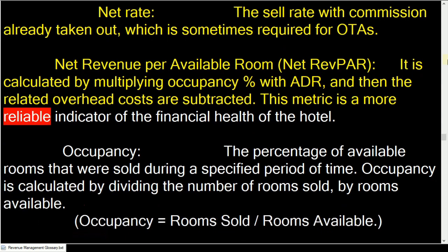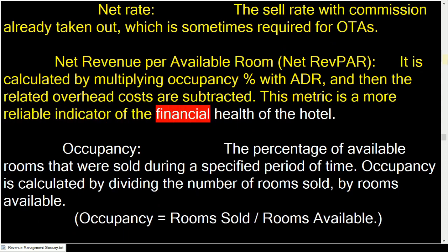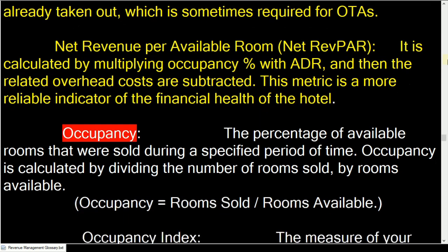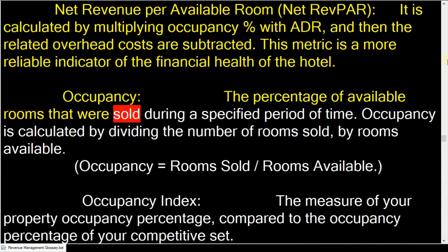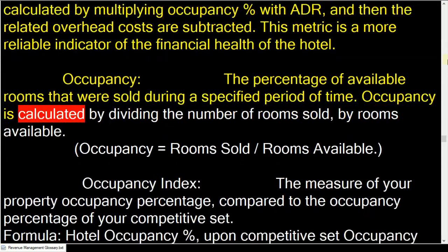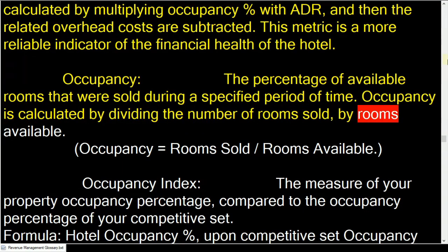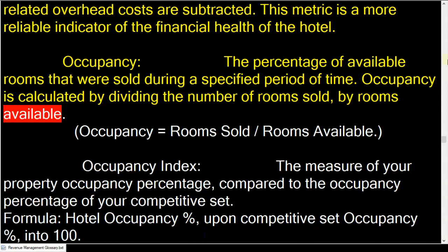This metric is a more reliable indicator of the financial health of the hotel. Occupancy is the percentage of available rooms that were sold during a specified period of time. Occupancy is calculated by dividing the number of rooms sold by rooms available.